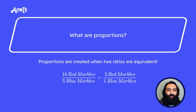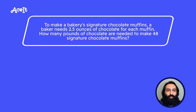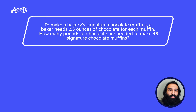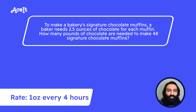Let's do a problem together. To make a bakery's signature chocolate muffins, a baker needs 2.5 ounces of chocolate for each muffin. How many pounds of chocolate are needed to make 48 signature chocolate muffins? Remember, 1 pound is equal to 16 ounces.